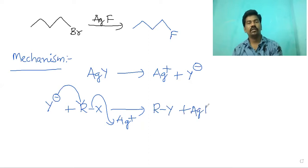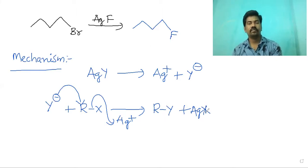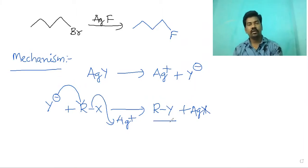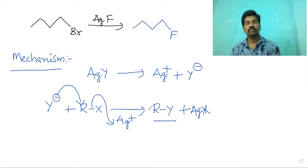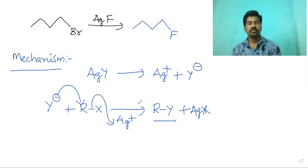The general equation for this reaction is: RY + AgF → RF + AgY, where Y is the leaving halide (chloride or bromide) and F takes its place. This is the Swartz reaction.